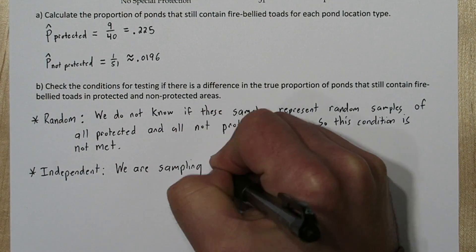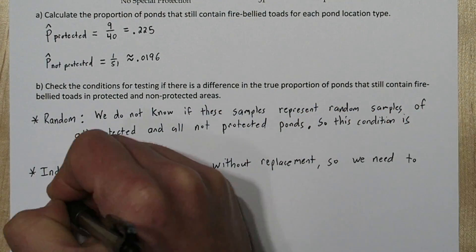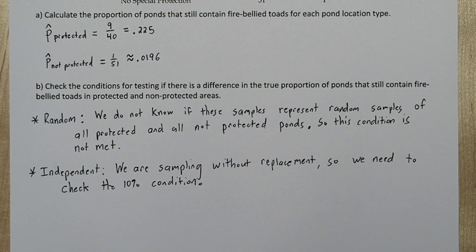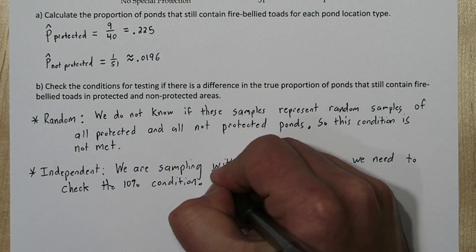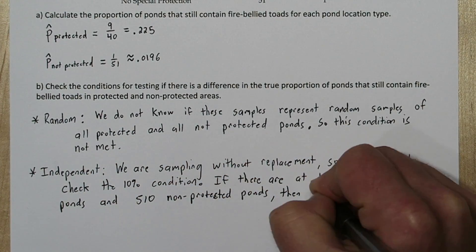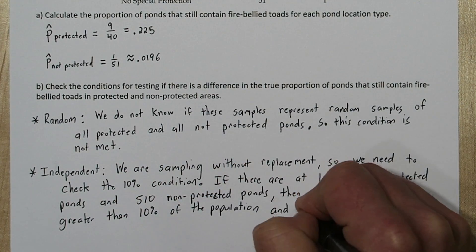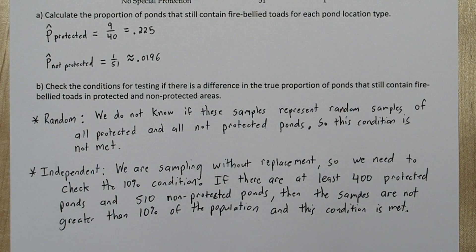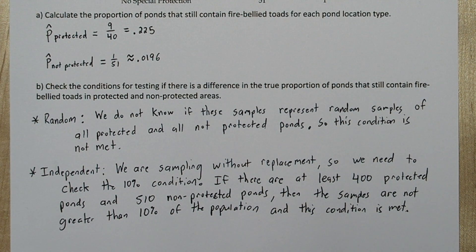Next is the independence condition. Since we're sampling without replacement, we need to check the 10% condition. So if there are at least 400 protected ponds and 510 non-protected ponds, then our samples are not greater than 10% of the population, so the independence condition would be met. However, if the random condition isn't met — say they selected all these ponds from the same general area — then it's fair to suspect that each pond's fire-belly toad population is not independent of each other. So the independence condition would not be met. In other words, if the random condition is not met, the independence condition isn't what you should be worried about — it's the random condition.